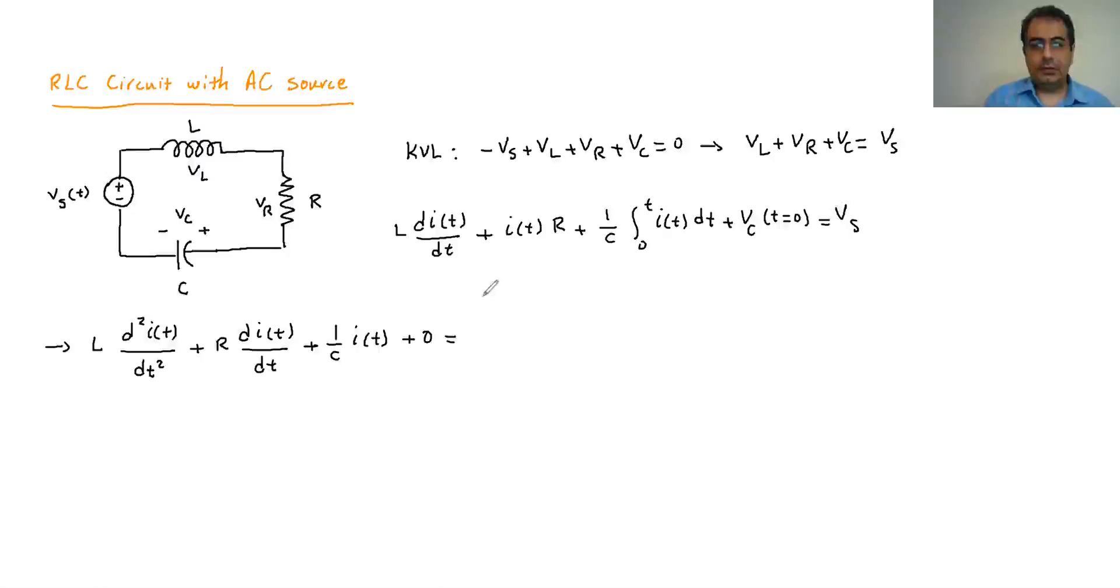Because the VS is also time dependent, it's gonna be the VS of t. So it's gonna be dVS(t) over dt. So that's what we're gonna have.